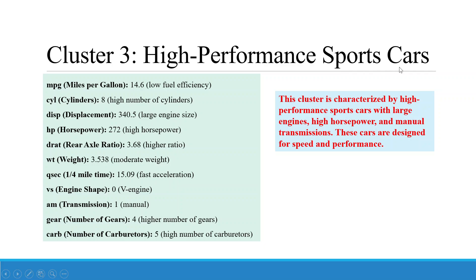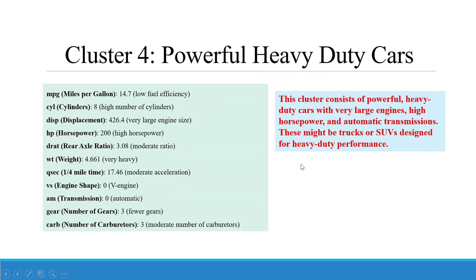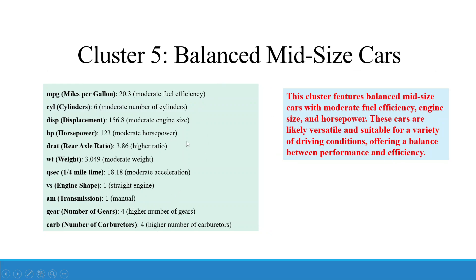Cluster 3 is 'High-Performance Sports Cars' — characterized by large engines, high horsepower, and manual transmissions, designed for speed and performance. Cluster 4 is 'Powerful, Heavy-Duty Cars' — consisting of cars with very large engines, high horsepower, and automatic transmissions, likely trucks or SUVs designed for heavy-duty performance. Cluster 5 is 'Balanced Mid-Size Cars' — featuring moderate fuel efficiency, engine size, and horsepower, likely versatile and suitable for a variety of driving conditions, offering a balance between performance and efficiency.